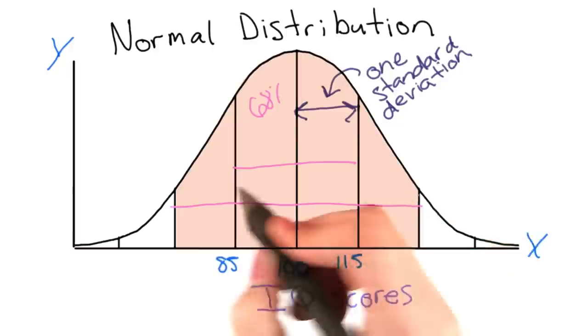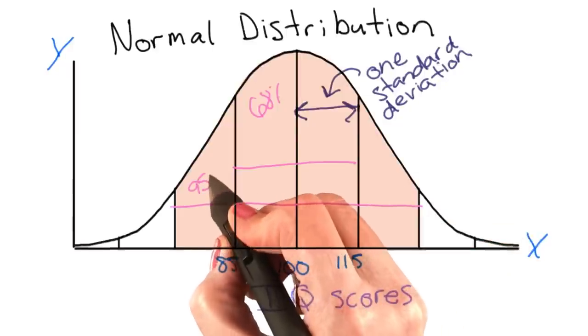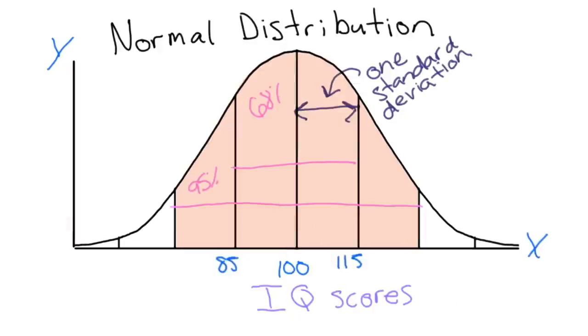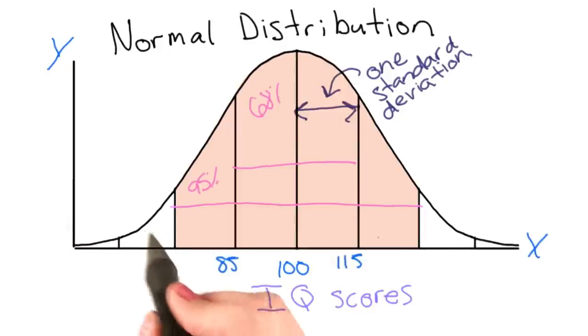Next, we see that 95% of the population will fall within two standard deviations above the mean, or two standard deviations below the mean.